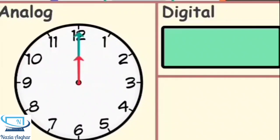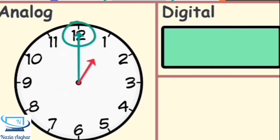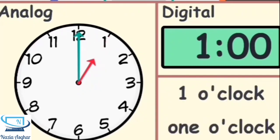Since there are 60 minutes in one hour, let's have a look at what happens when the minute hand moves clockwise around the clock. The minute hand is pointing to the 12, so it is something o'clock. The hour hand is pointing at the number one, so the time is one o'clock.